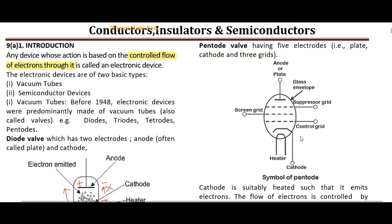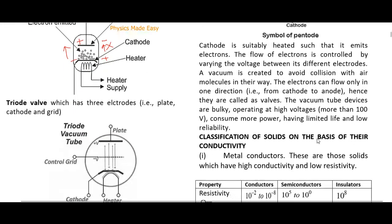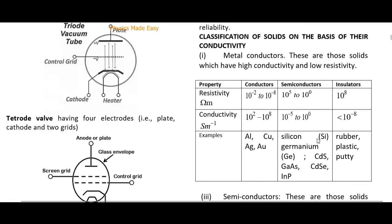Another weakness of vacuum tubes was that once you switched on your device, it would take one or two minutes to start. Due to these and other weaknesses, they were replaced. Now we proceed to the classification of solids: there are three kinds — conductors, insulators, and semiconductors.